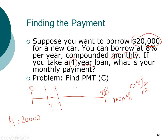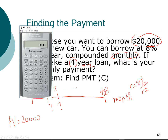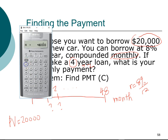Now we have all the information we need to compute the payment. When using the calculator, check that it is in end mode for an ordinary annuity, and reset it by clearing TVM. Present value is $20,000 — kept positive because the bank is giving me the money. Interest rate is 8 divided by 12. The investment horizon is 48 months. Computing the payment, our cash flow comes out to $488 per month for this car.